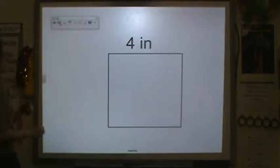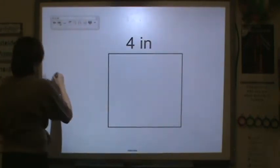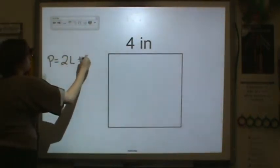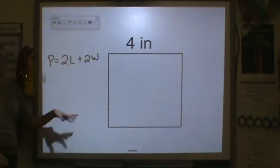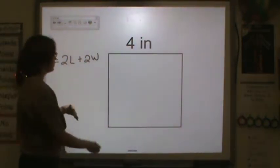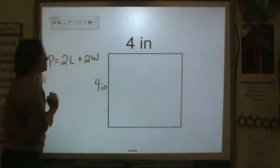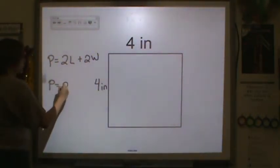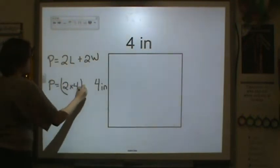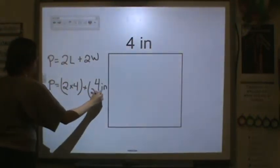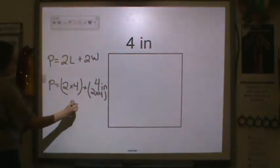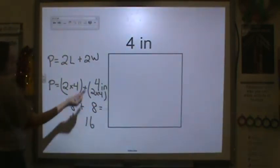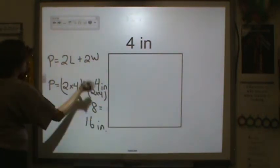Moving on. Now, we have a square. So, my perimeter is equal to 2L plus 2W. Well, we don't have the width, but remember, if we have a square, all four sides are equal, so we know the width is also 4 inches. So, we have perimeter is equal to 2 times 4, plus 2 times 4. 2 times 4 is 8, plus 8. So, we have a total of 16 inches.